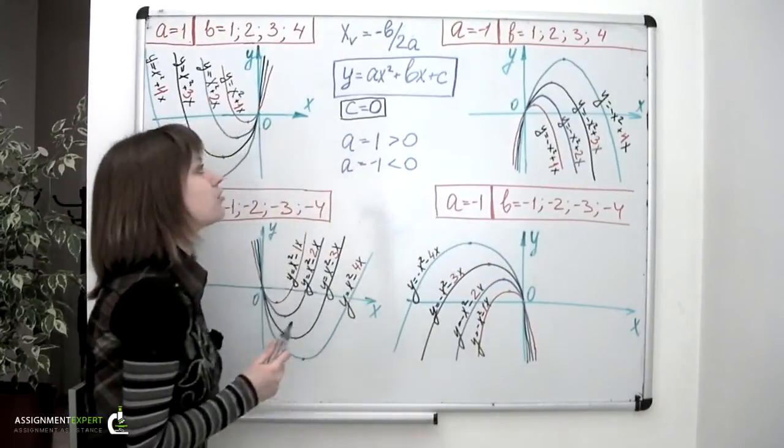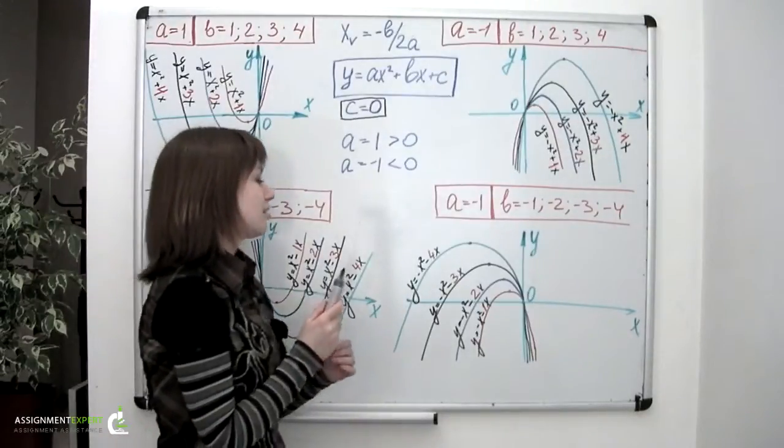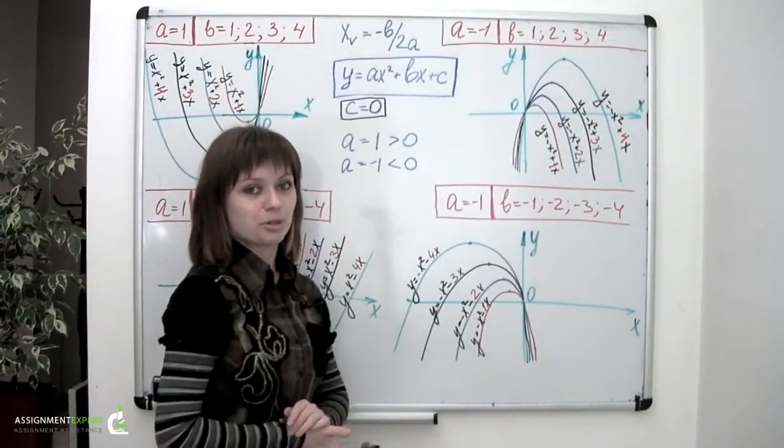So this is how this b coefficient influences the location and the shape of the parabola.